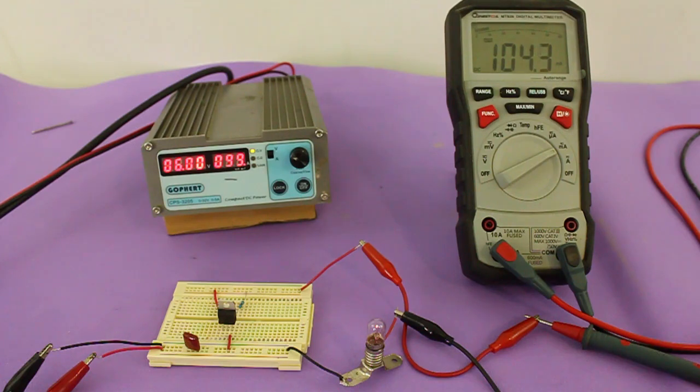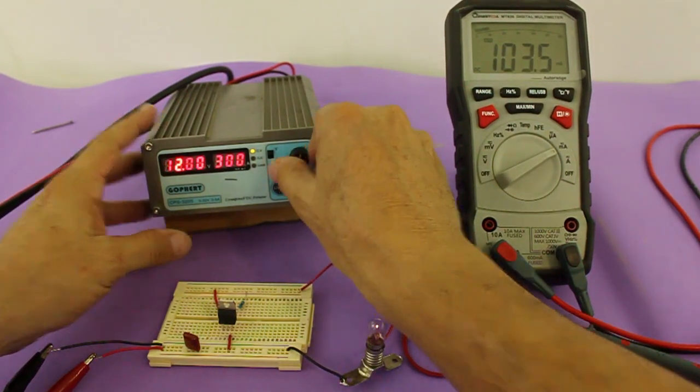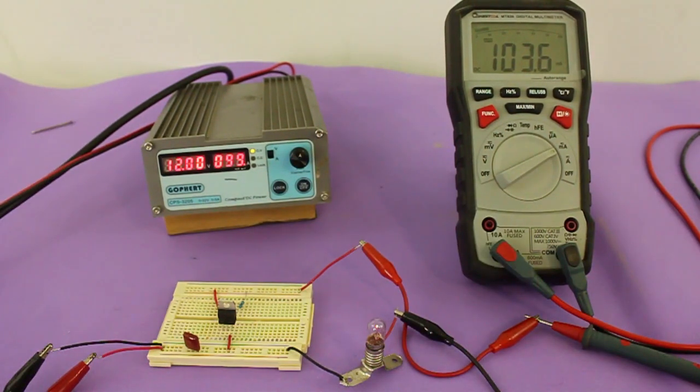Okay, we can see that we have a current of 104 milliamps, pretty close to the 100 milliamps calculated, but we are using a slightly different resistor and also resistors have a 5% tolerance in its value. And of course, we can vary the voltage, 12 volts, and the current remains constant.